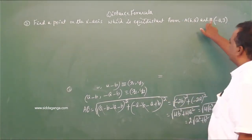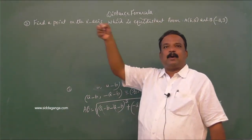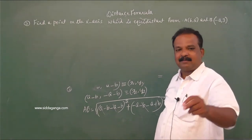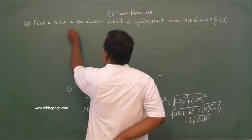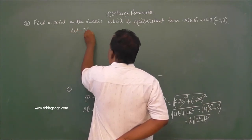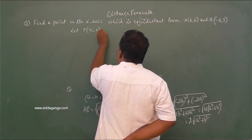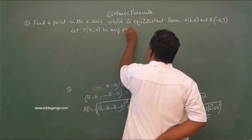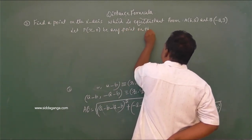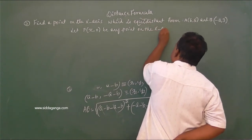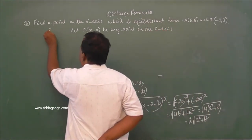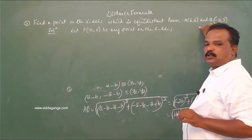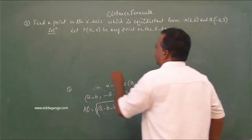Which is equidistant from A(6, 5) and B(−4, 3). You know that any point on the x-axis has y-coordinate 0. Let P(x, 0) be any point on the x-axis. Now let us take those given points as A and B. Since P is equidistant, PA = PB — that is the given condition.